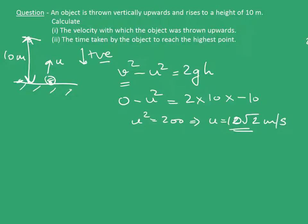Now having found out the initial velocity, let's see how to calculate the time taken. For this we will use the formula v - u = gt. So t = (v - u)/g. Now final velocity is 0, and the initial velocity is -10√2.